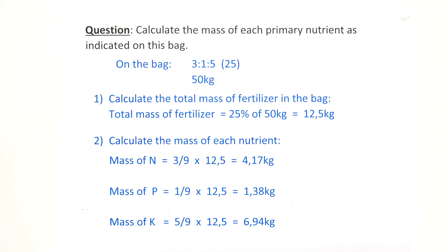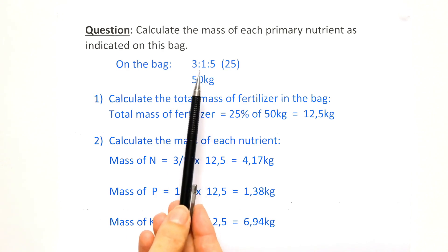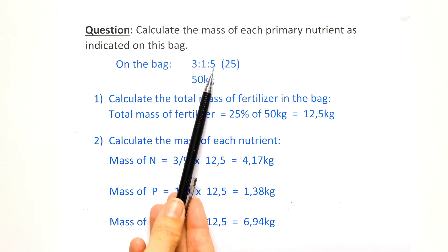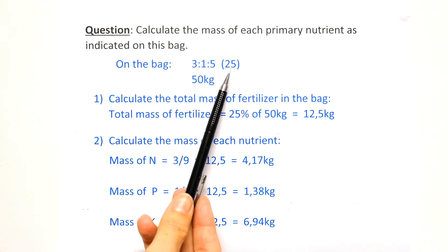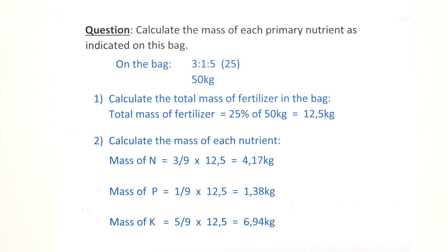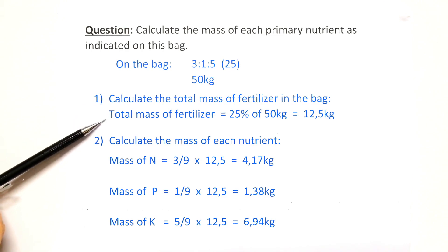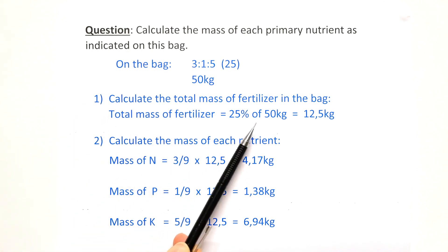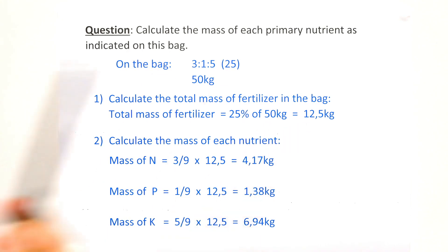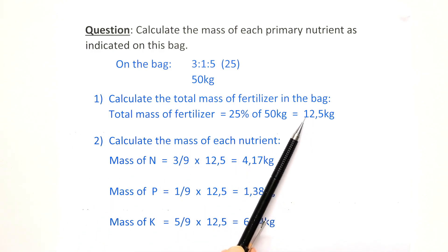This is a typical type of question from this chapter: calculate the mass of each primary nutrient as indicated on the bag. So we need to calculate the mass of nitrogen, phosphorus and potassium in this bag. The bag is 50 kilograms, the nutrients are in the ratio 3:1:5 — nitrogen, phosphorus, potassium — and 25% of the 50 kg bag is fertilizer. In the first step, we calculate the total mass of fertilizer in the bag: 25% of 50 kg = 12.5 kg.